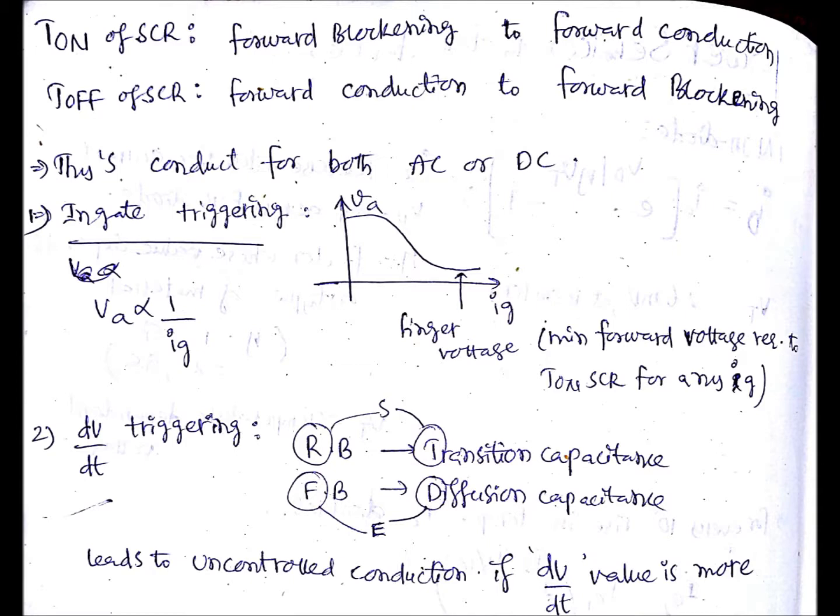One important point is that thyristors conduct for both AC or DC. You just need to give some gate current for turning on in case of gate triggering. So here if you observe in case of gate triggering, I have drawn a plot there between Va and ig, where Va is anode voltage or the voltage across the anode and cathode of SCR. The x-axis is ig, the gate current.